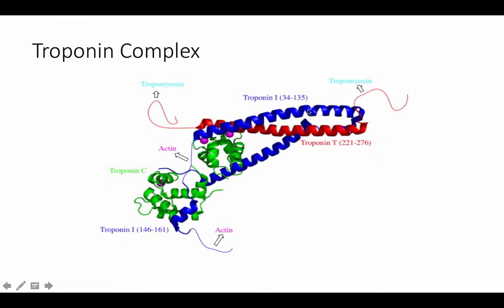As mentioned, troponin consists of three subunits: Troponin I, which acts as an inhibitor of actomyosin ATPase. Actomyosin ATPase is a catalyst of ATP hydrolysis when the myosin head group is interacting with actin. Troponin also consists of troponin T, which anchors the entire complex to tropomyosin, and troponin C, our primary protein of interest in this video.